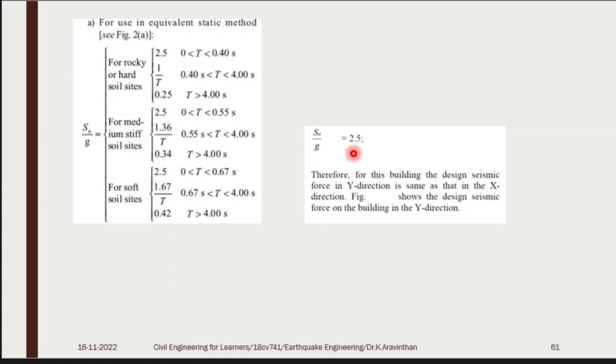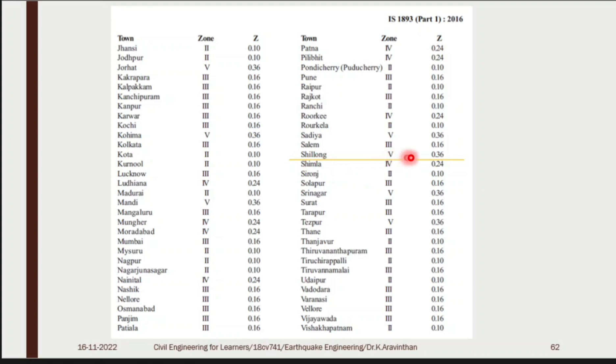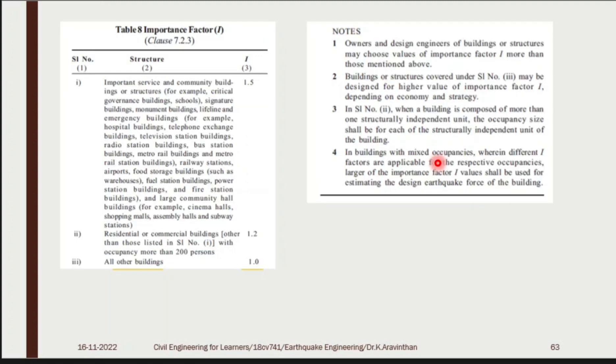Find zone. Shillong coming under zone 5, Z equals 0.36.